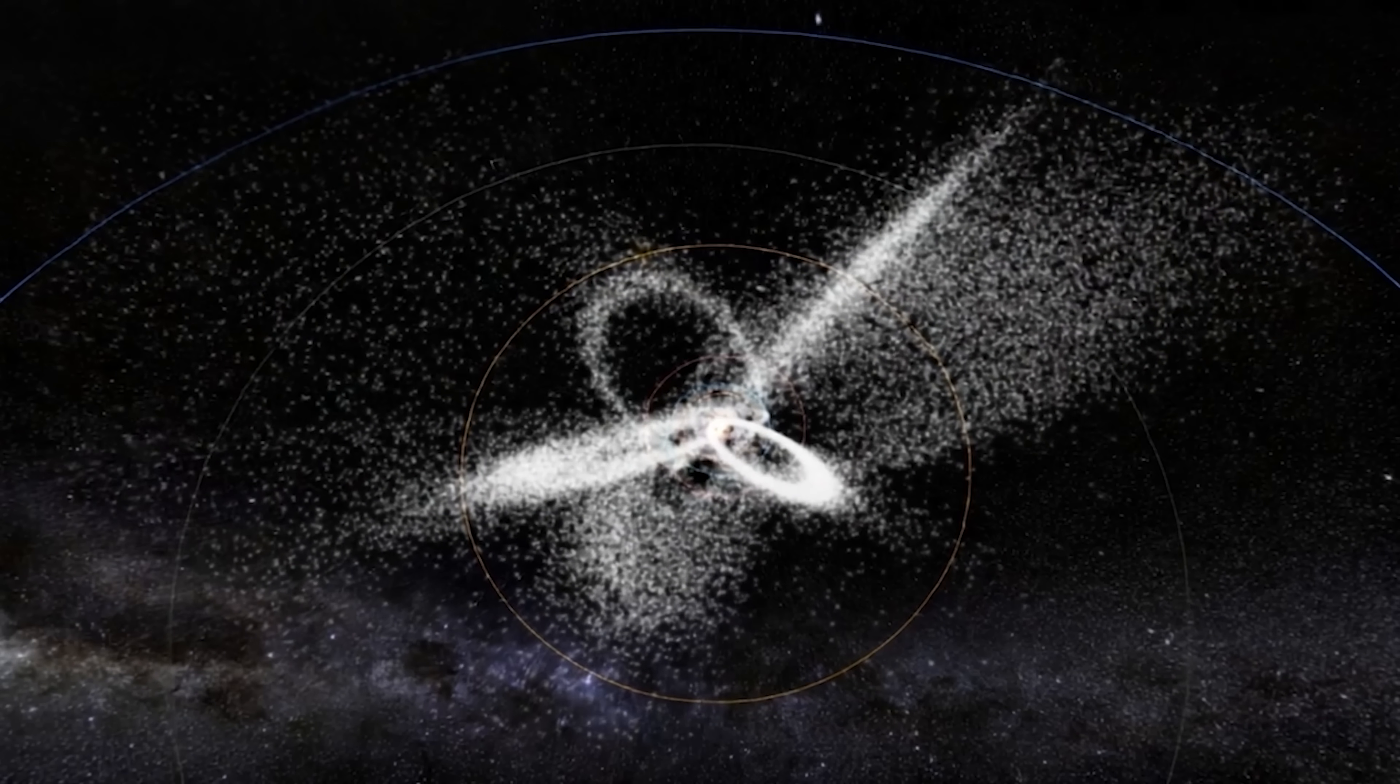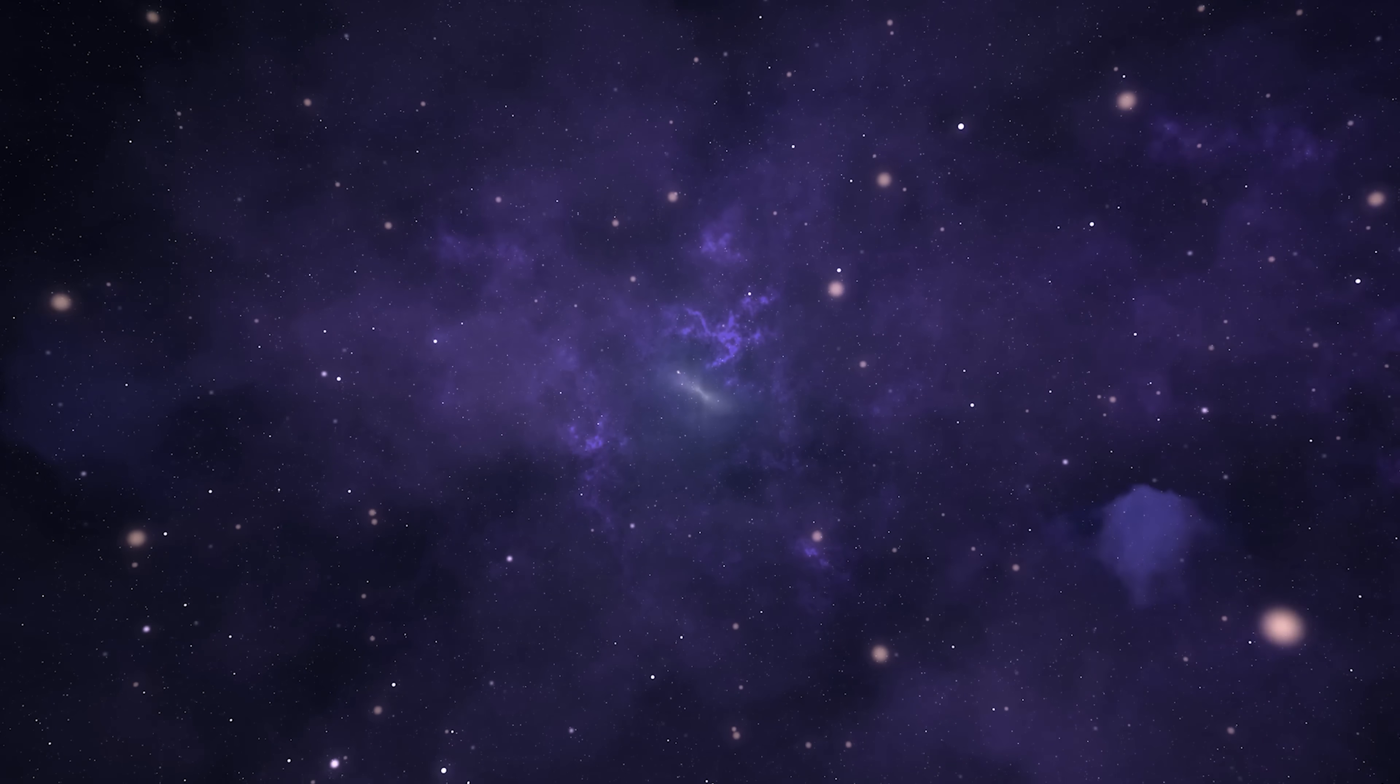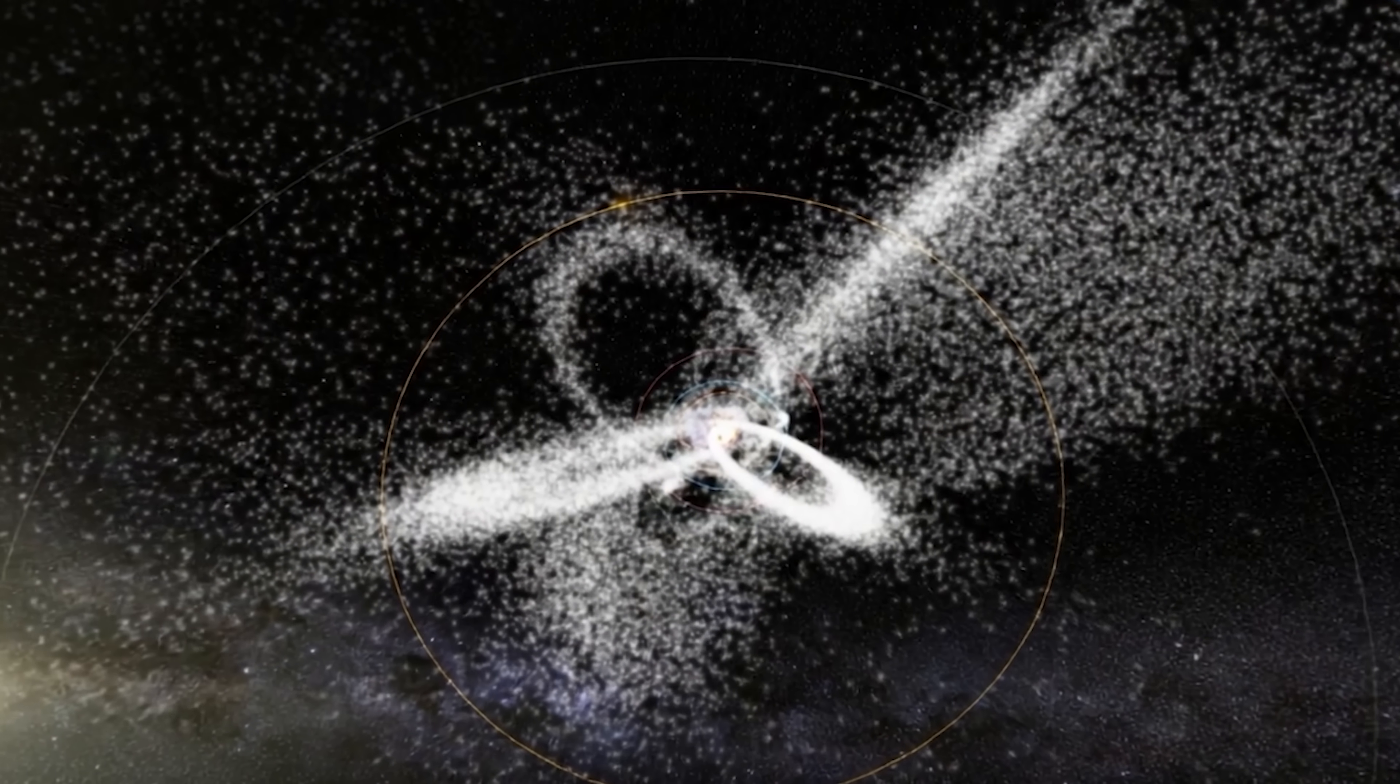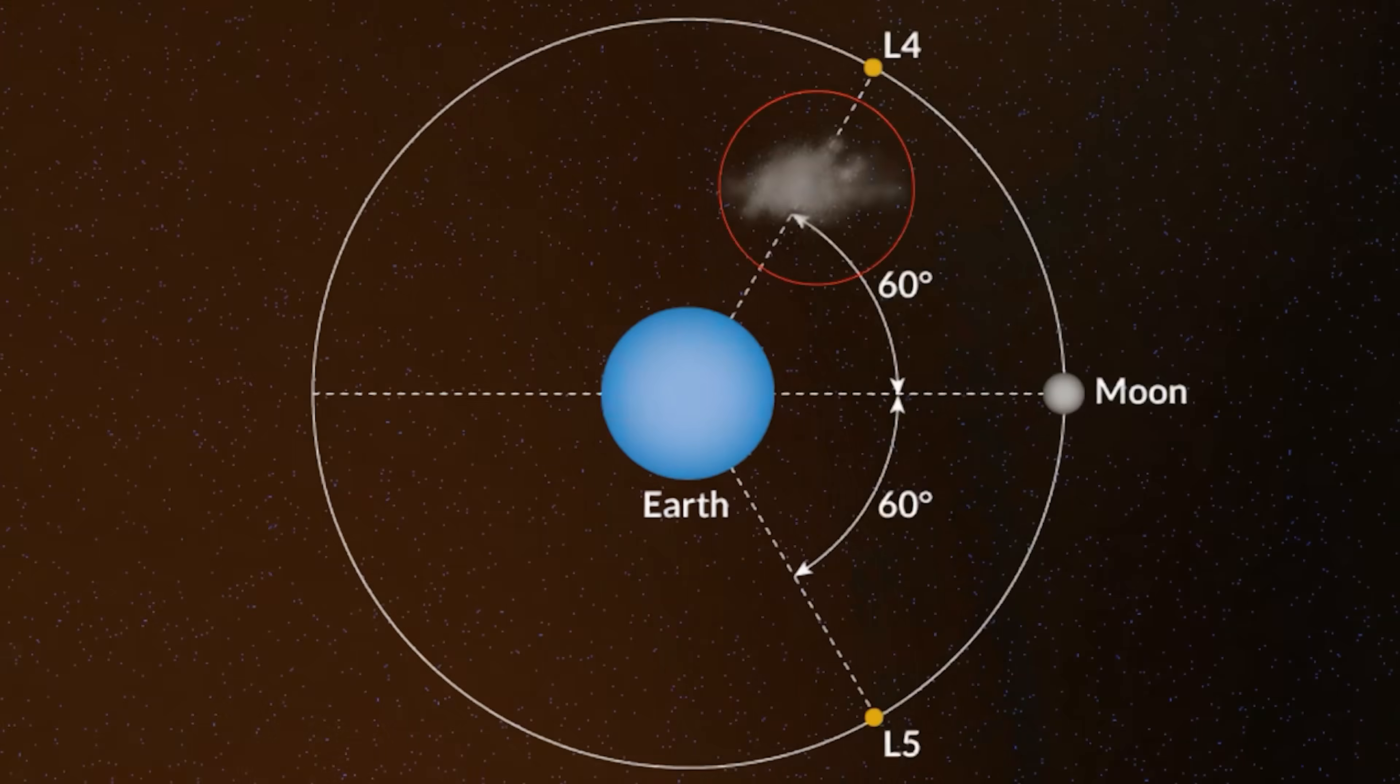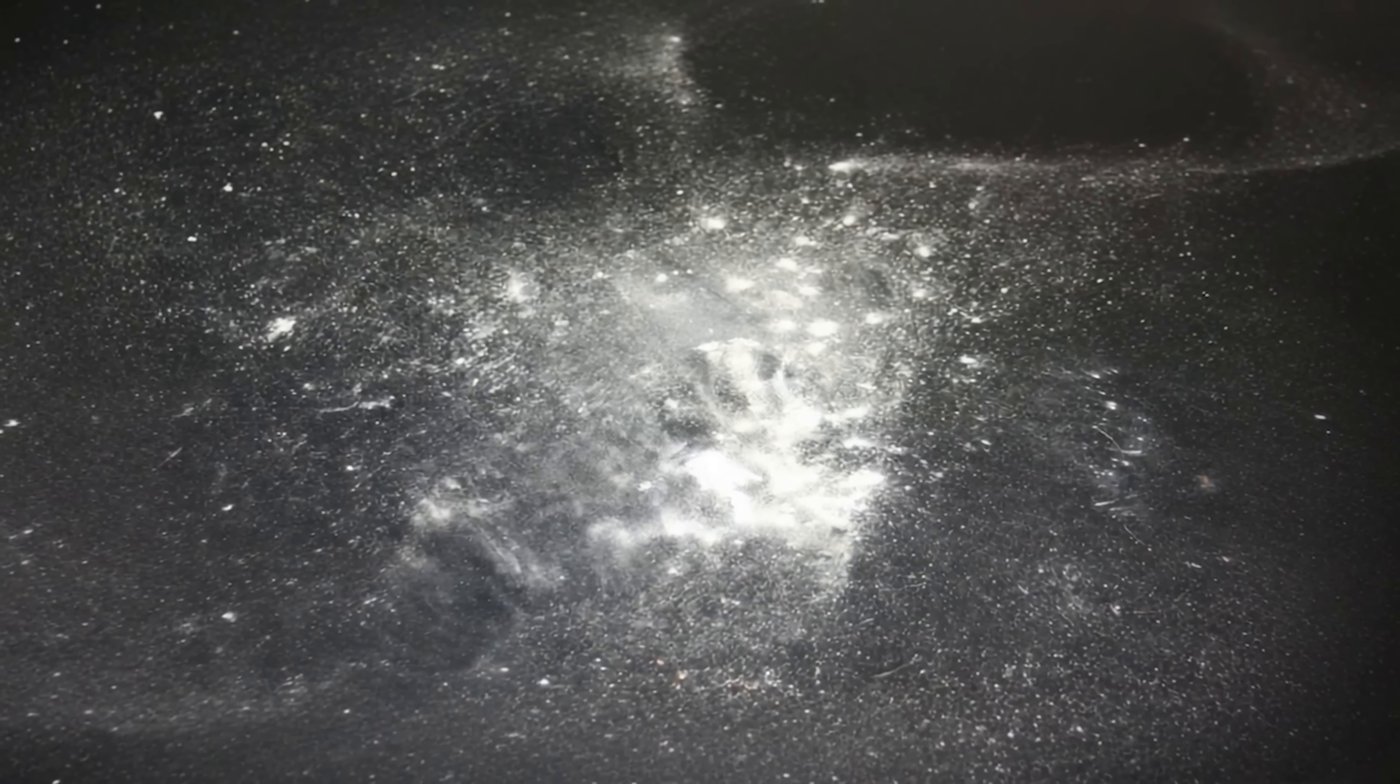Perhaps most intriguingly, the ghost moons provide a window into the deep history of our solar system. The dust particles trapped in these clouds have been accumulating for potentially billions of years, creating a kind of cosmic time capsule that preserves information about ancient impact events, solar activity, and the gradual evolution of our planetary neighborhood. Each particle tells a story spanning geological ages, offering insights into processes that shaped our world long before life appeared on Earth. The vindication of Kordolewski's observations after nearly six decades serves as a powerful reminder that the universe still holds secrets hiding just beyond the limits of our detection capabilities. Sometimes the most extraordinary discoveries aren't found in distant galaxies or exotic phenomena, but in our own cosmic backyard, waiting patiently for the right technology and persistence to reveal their ghostly presence.